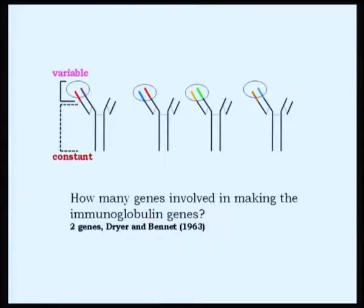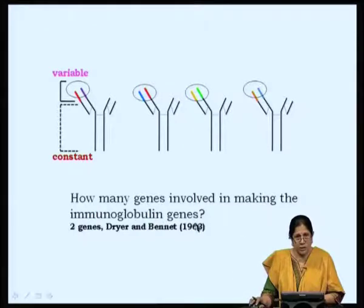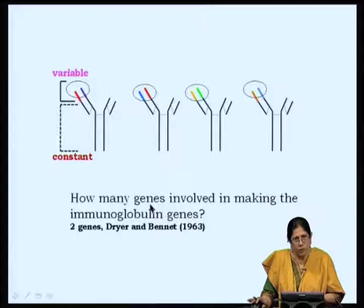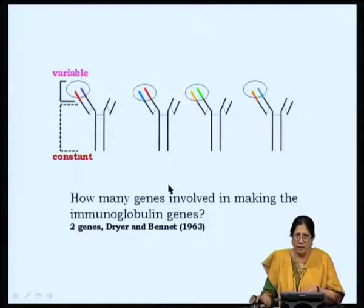The somatic hypermutation theory said that all receptors on the B cell surface are identical at the amino terminus, but when such a B cell encounters an antigen, there is hypermutation in that region enabling antigen-receptor interaction. This also did not hold much water. In 1963, Dreyer and Bennett proposed for the first time that immunoglobulin is coded for by two different gene segments — one corresponding to the variable region and the other to the constant region.